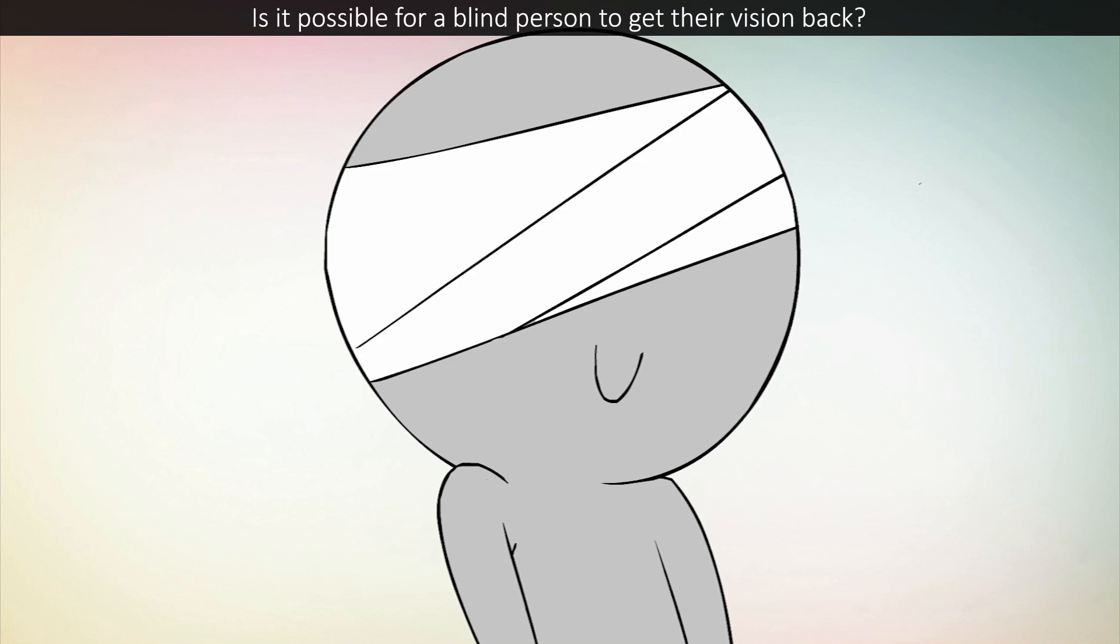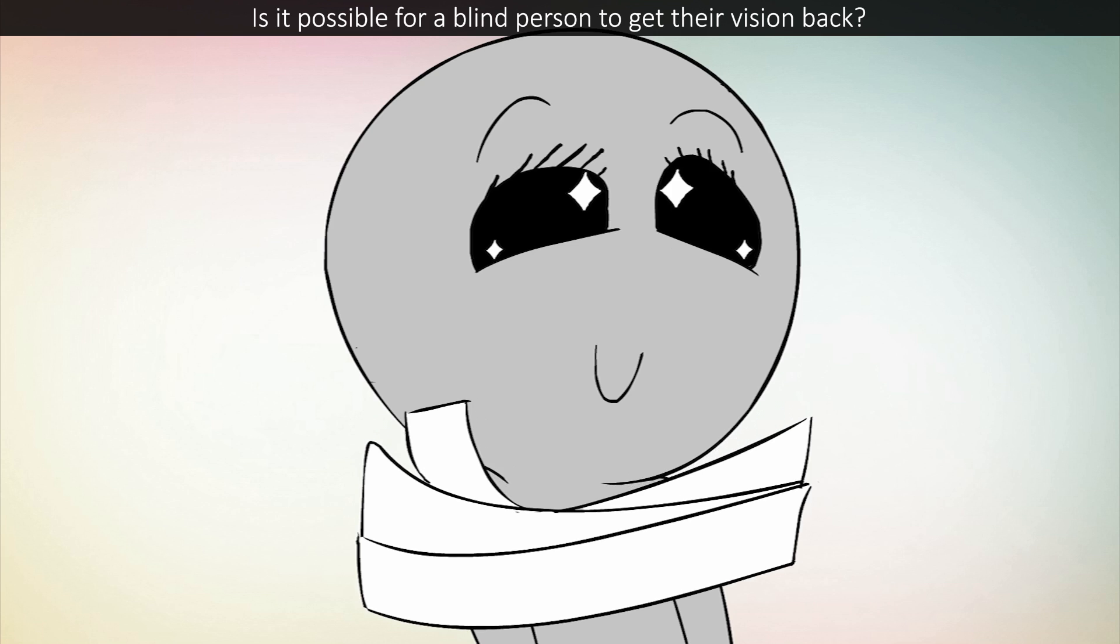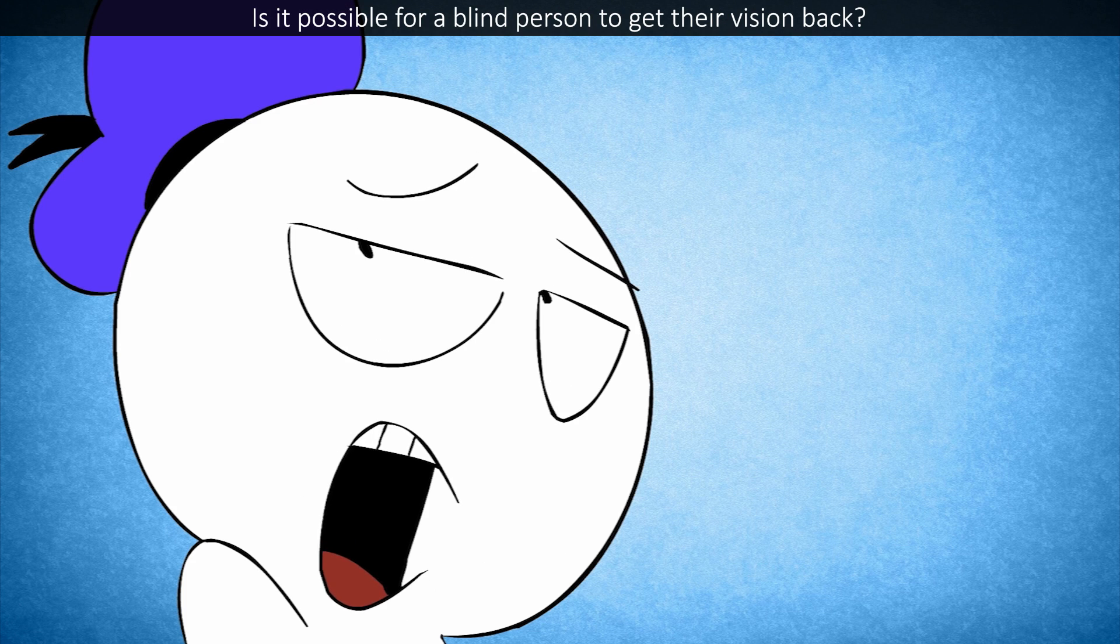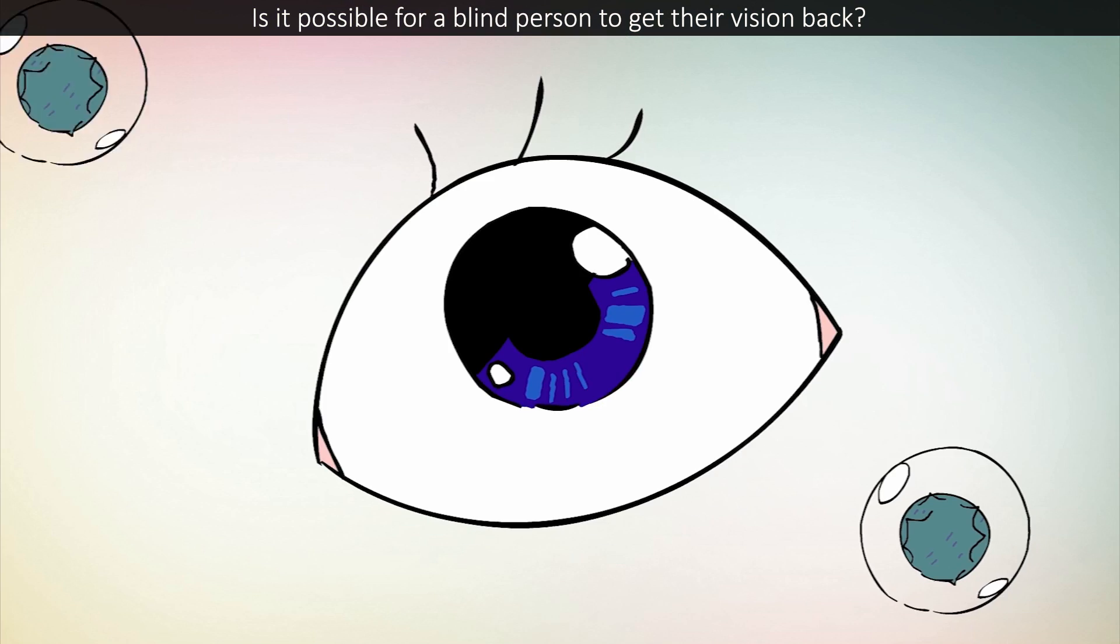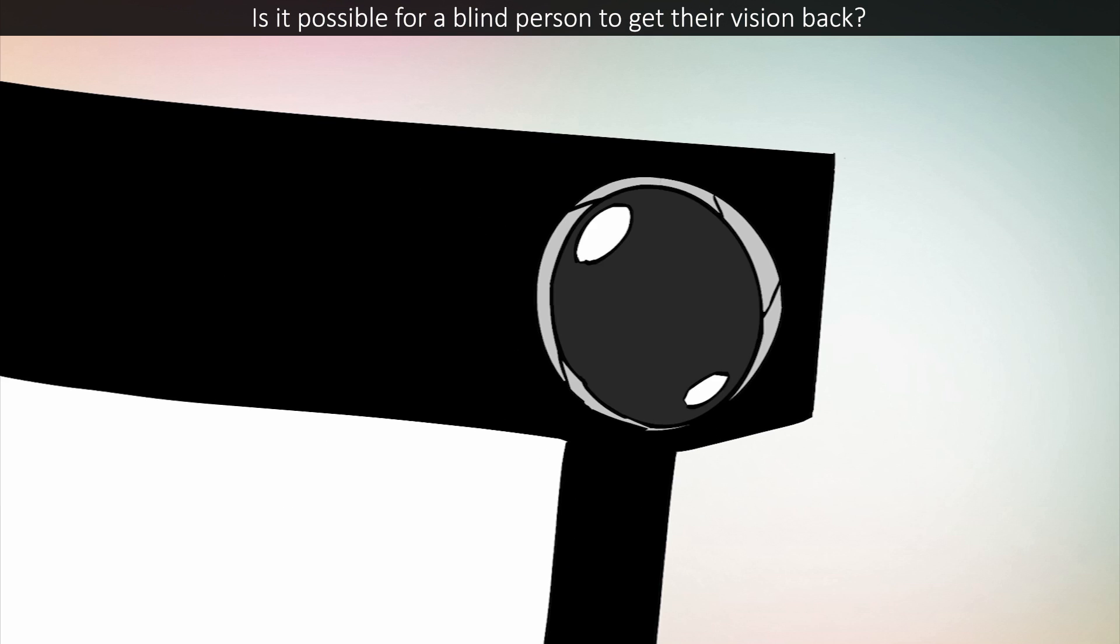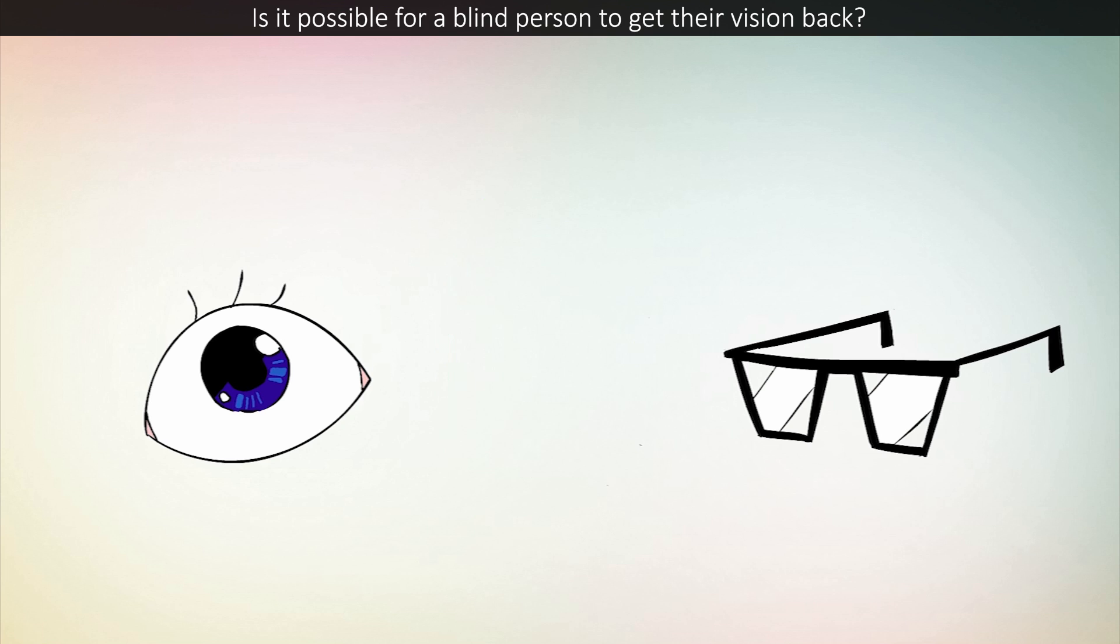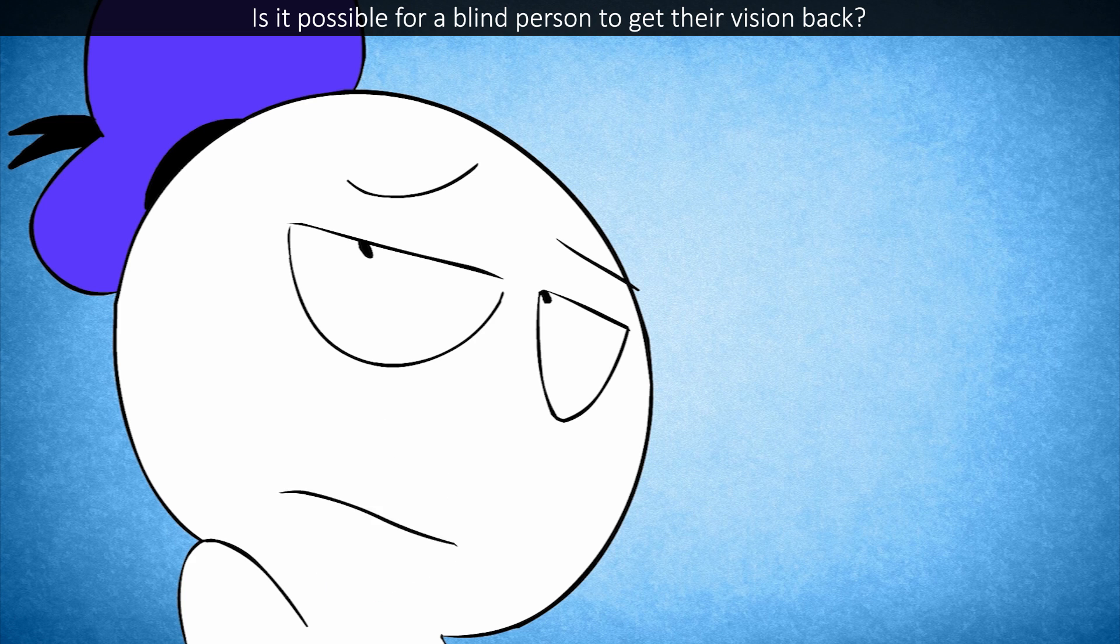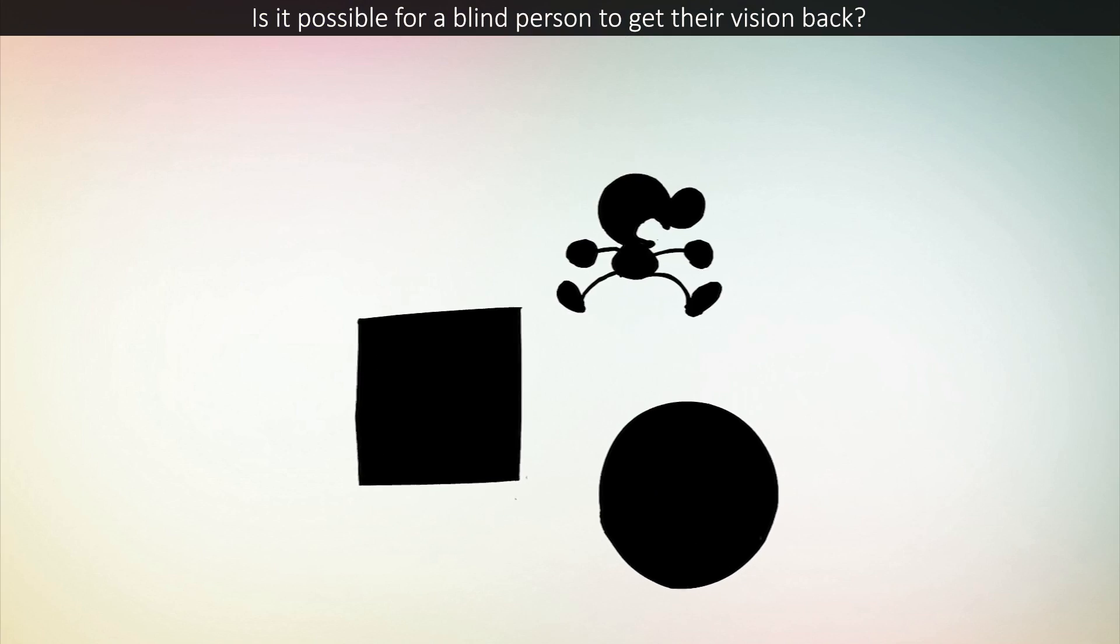Yes, there have been successful cases of a blind person regaining their sight. These resulted from a variety of experimental procedures such as stem cell surgery. One such procedure uses glasses with tiny cameras attached to send signals to the retinal implant in the patient's eye. However, these only restore partial sight, allowing the person to make out shapes.